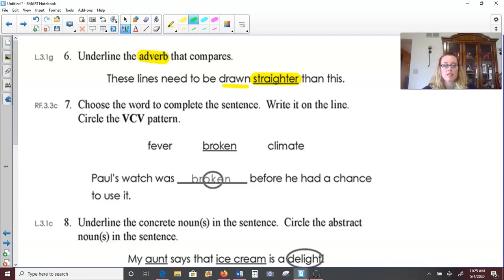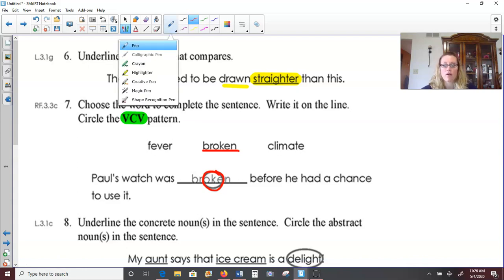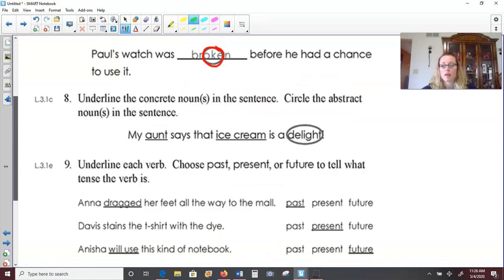Number seven, choose the word to complete the sentence. Write it on the line. And it wants us to circle the vowel consonant, vowel pattern. All right. So out of fever, broken, and climate, Paul's watch was blank before he had a chance to use it. Well, broken seems to be the best word choice. Paul's watch wouldn't have a fever. Paul's watch was broken and the vowel consonant vowel would be the O-K-E. Remember our vowels, A-E-I-O-U. So O-K-E is our vowel consonant vowel pattern.